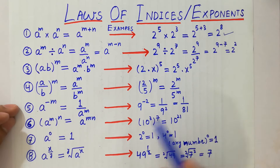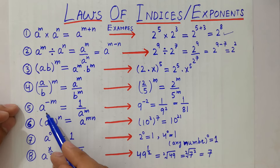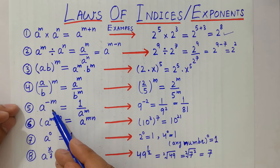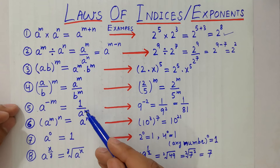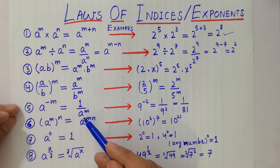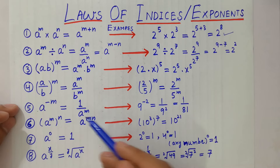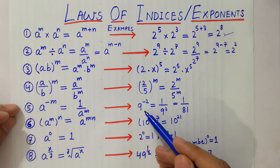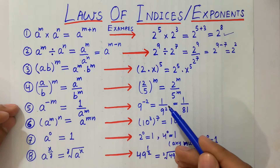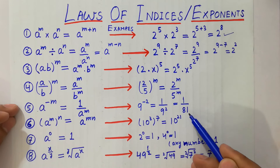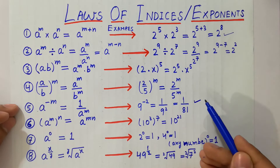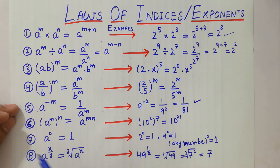Number 5: a raised to the power minus m is always equal to 1 over a raised to the power m. For example, 9 raised to the power minus 2 is equal to 1 over 9 raised to the power 2.